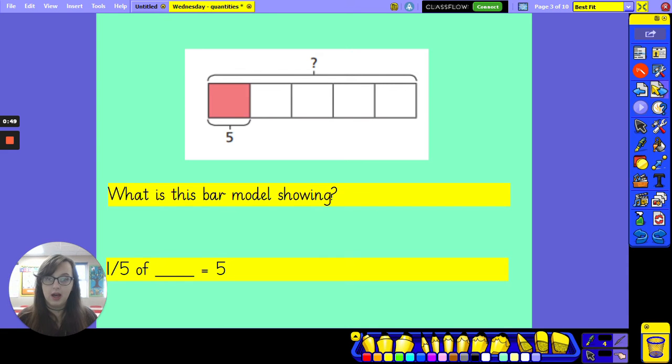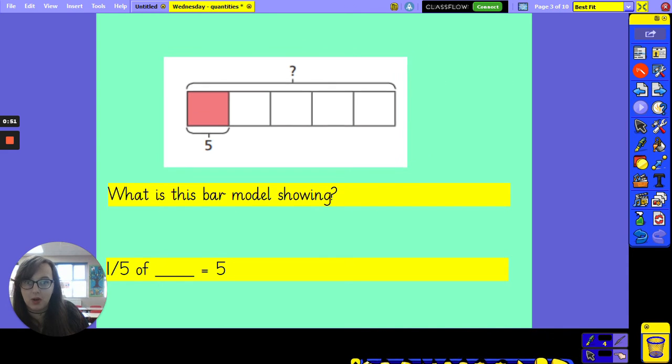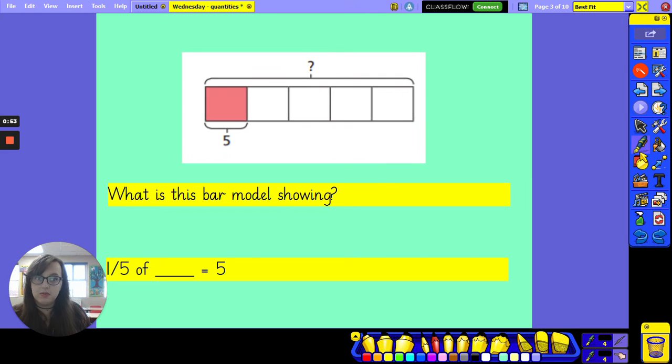To show you what I mean, I've got a bar model here. Now I don't know what this bar model is worth. It's a question mark. I don't know the amount. But I do know what one-fifth is worth. This is one part out of five parts, one-fifth, and it's worth five.